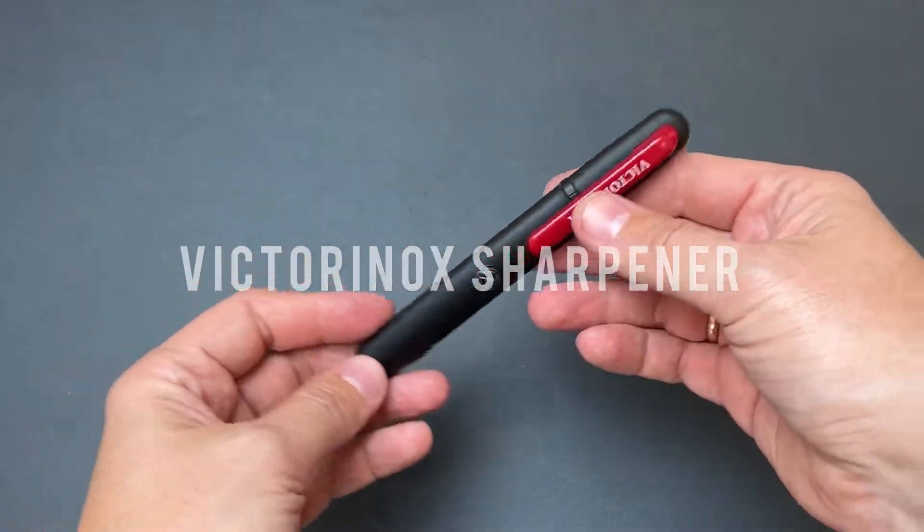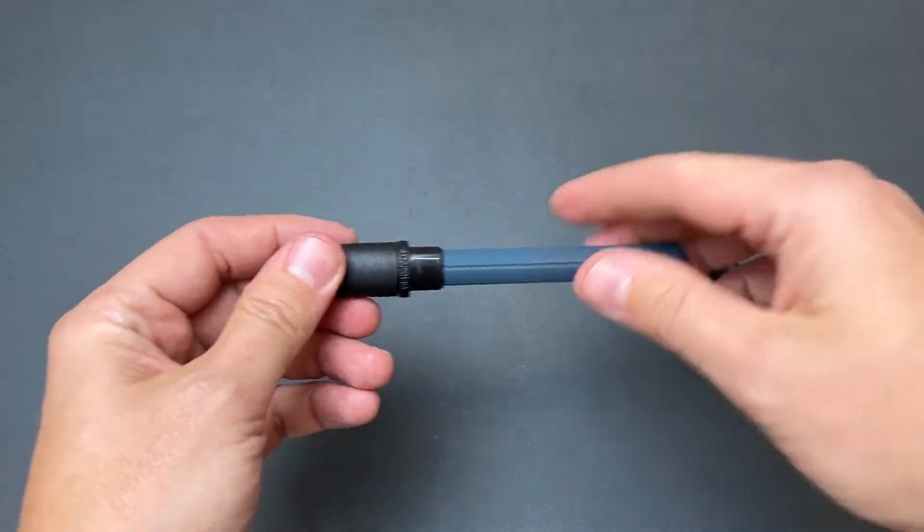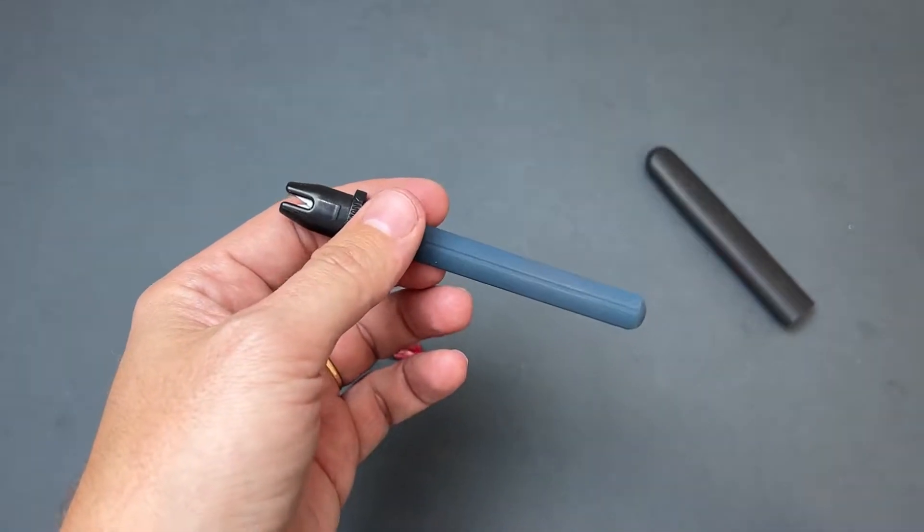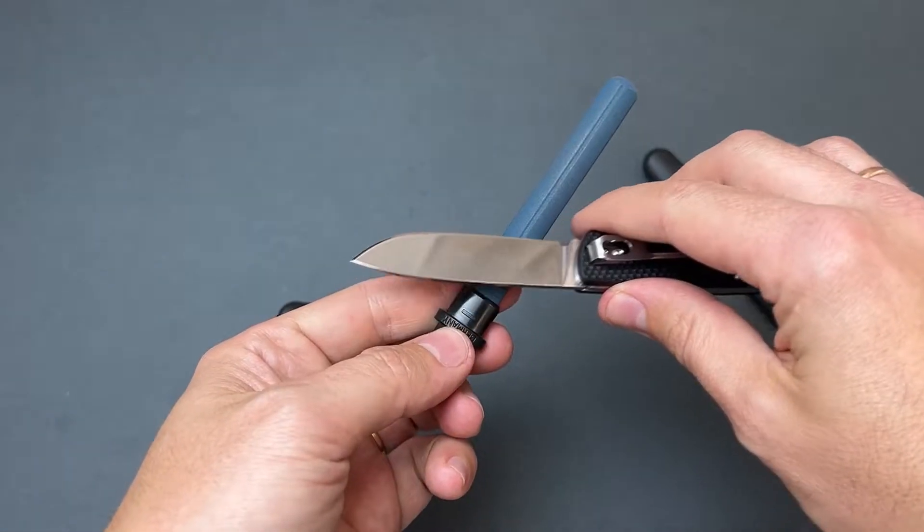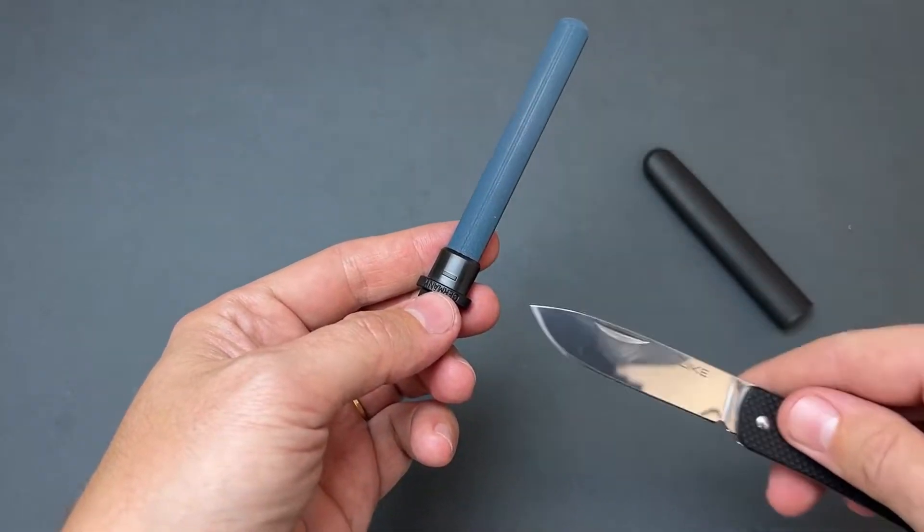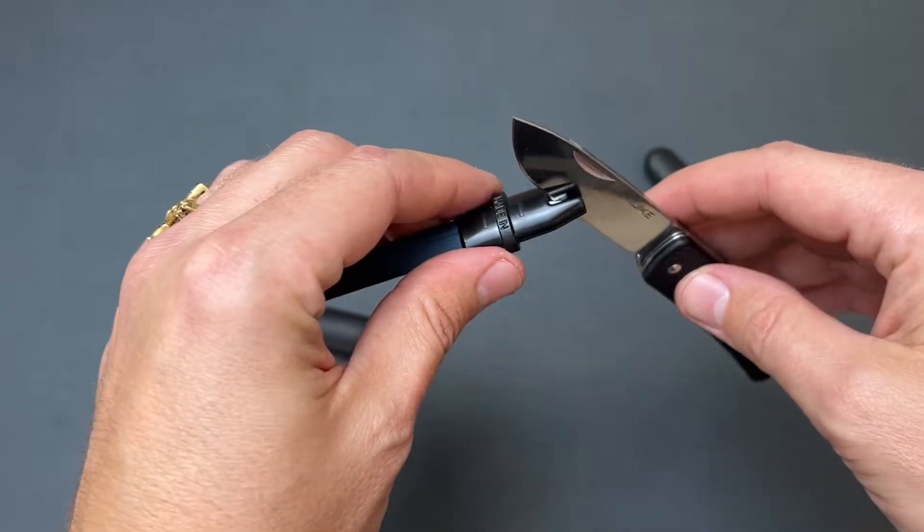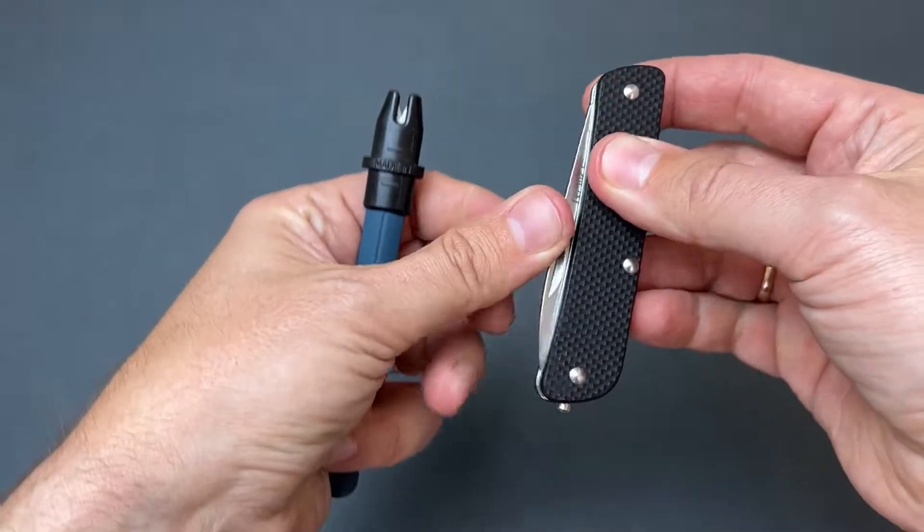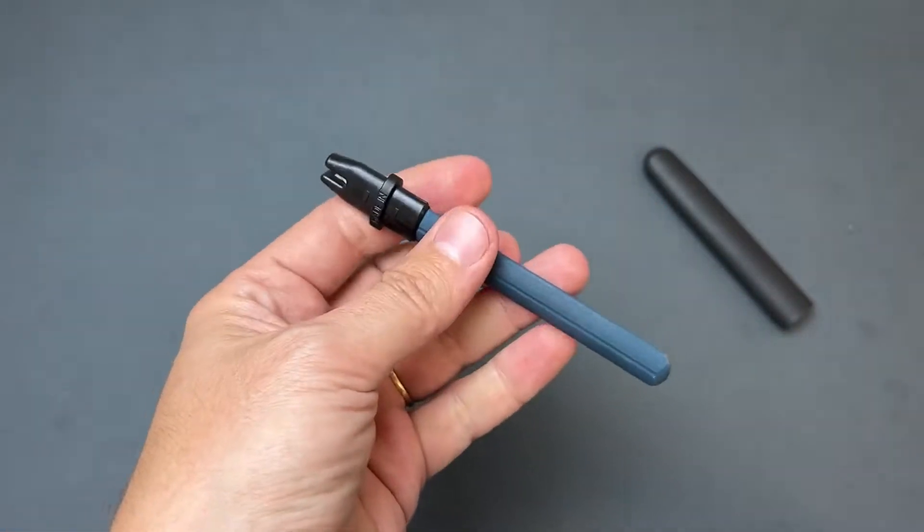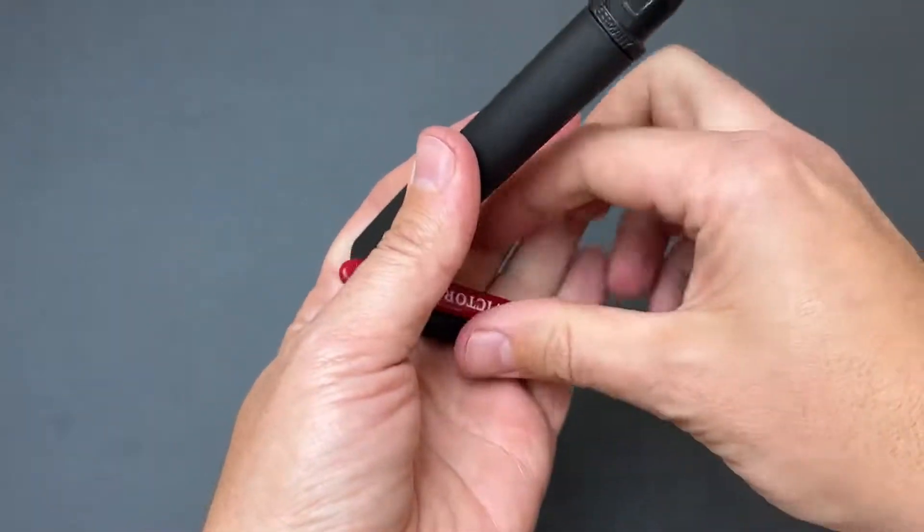What I have with me is a Victorinox sharpener. This is simple, how to use it: like this way, this way, and finish with this ceramic angle. So your knives will always be sharp enough using only this small tool in your pockets.